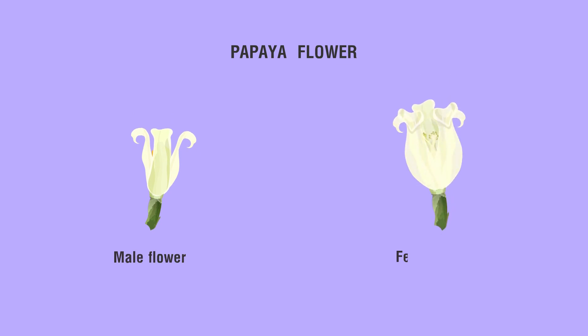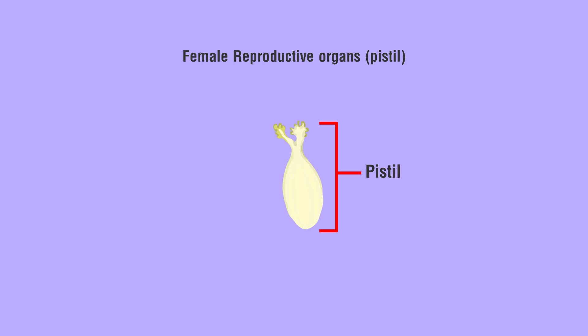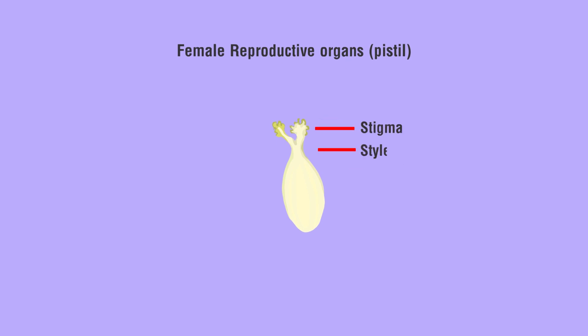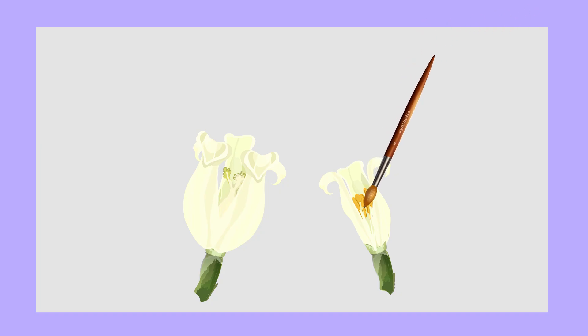Observation — Papaya Flower: Papaya has both male and female flowers. They have five petals. Male Reproductive Organs — Stamen: Stamen is made of anther and filament. Female Reproductive Organs — Pistil: The pistil is a long tubular organ which is the female part of the flower. The pistil consists of stigma, style, and ovary. The stigma is where pollen is collected and it is at the top of the pistil. In the middle is the style.